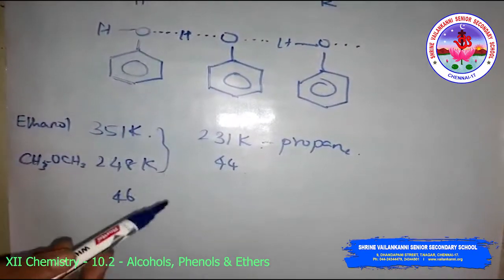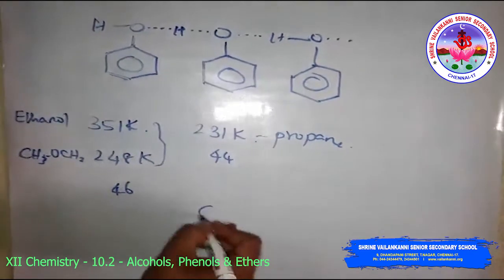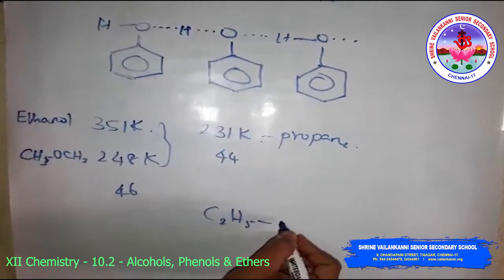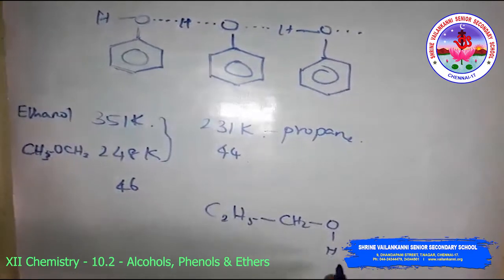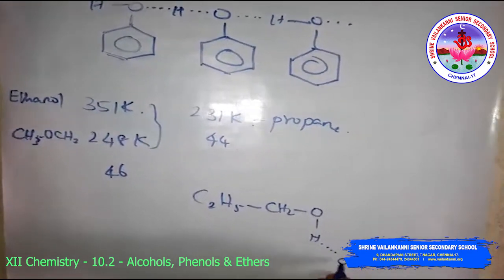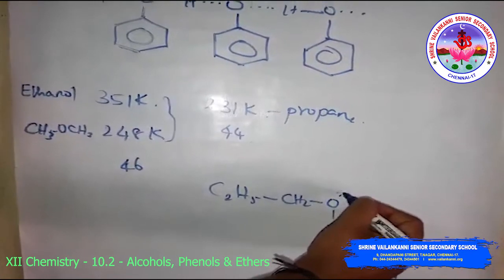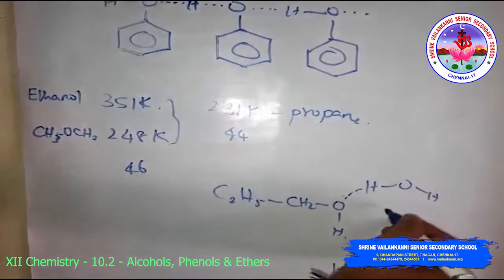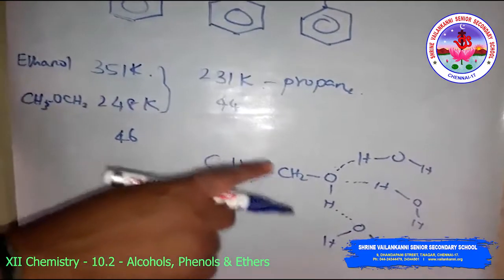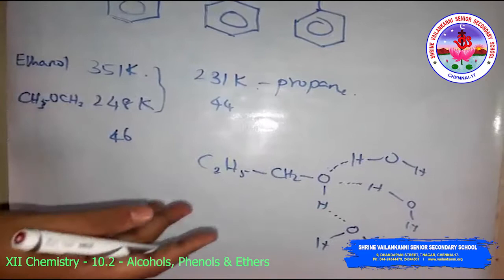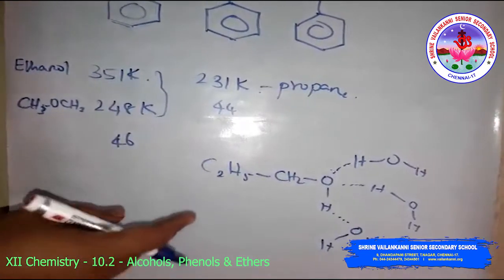Alcohols and phenols are soluble in water due to their ability to form hydrogen bonds with water molecules. For example, C₂H₅CH₂OH forms hydrogen bonds with water molecules. Solubility decreases with increasing size of the alkyl or aryl groups. Several lower molecular mass alcohols are miscible with water in all proportions.